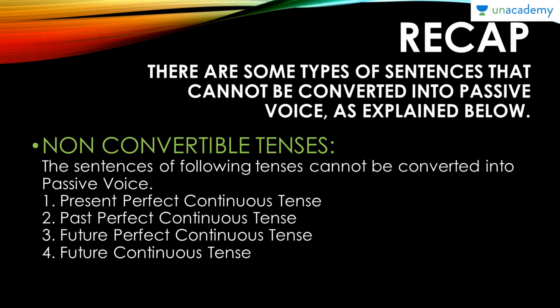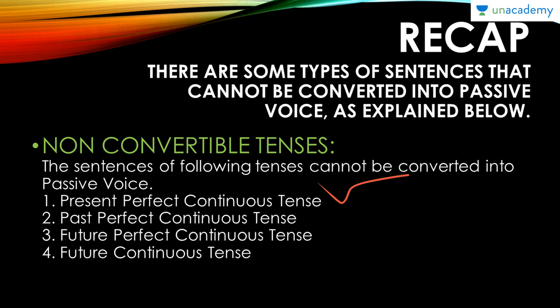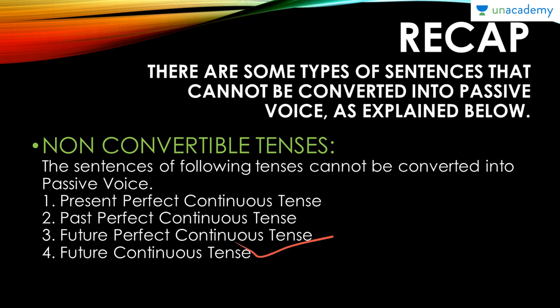Here is a quick recap of what we did in the previous module. There are some types of sentences that cannot be converted into passive voice. The sentences of the following tenses cannot be converted into passive voice: present perfect continuous tense, past perfect continuous tense, future perfect continuous tense, and future continuous tense. We looked at examples for each of these types of sentences in the previous module.